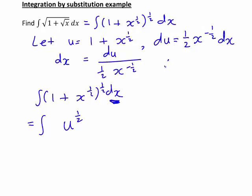And when you actually rearrange that further, division by a half, that's the same as multiplication by 2. Similarly, division by x to the negative a half is the same as multiplying by x to the half. So we find that dx equals 2x to the half du. So maybe we could put that expression in here. Would that allow us to evaluate our integral?